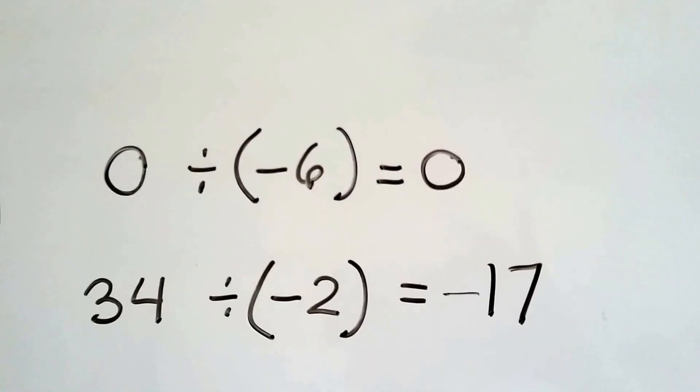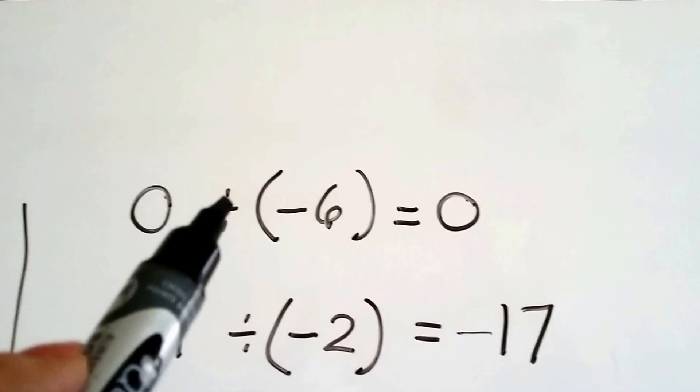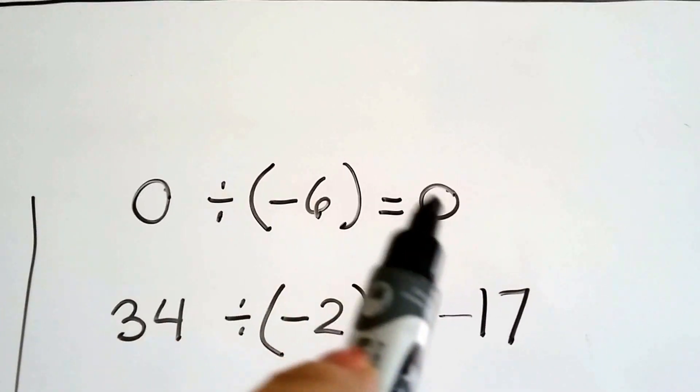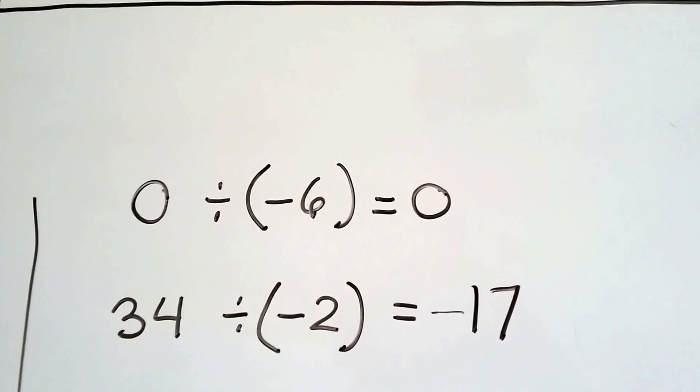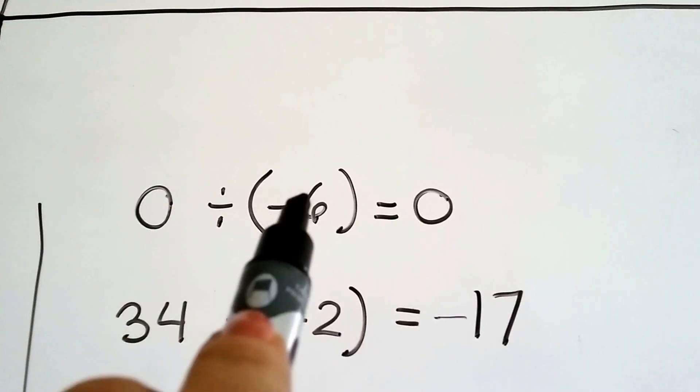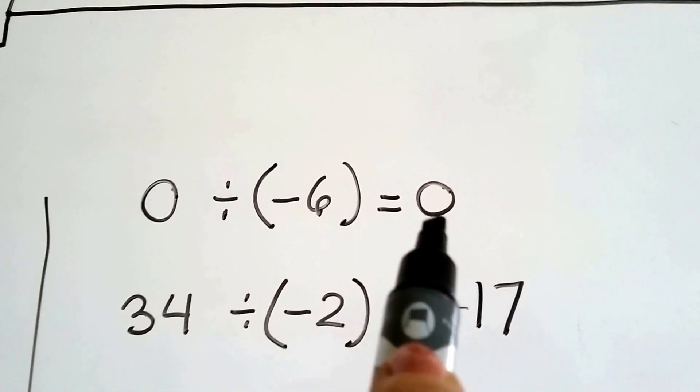Alright, so now let's take a look at this. We're going to get into some really grown-up stuff here. We've got a 0 divided by a negative 6. Well, that's going to equal 0, right? Because if you have 0 and you split it into 6 parts, it's still going to be 0.